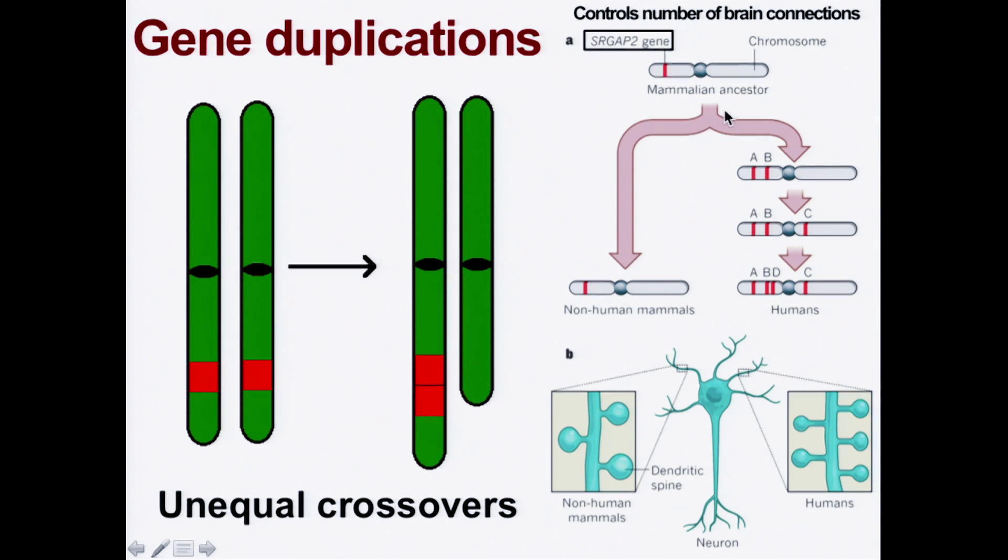But something on the way to humans, along our ancestry, going from small little monkey-like things through apes to people, there has been repeated gene duplication so that A, B, C, and D, these are all replicates of the same gene. So there's four copies on this chromosome, whereas our ancestors only had one.